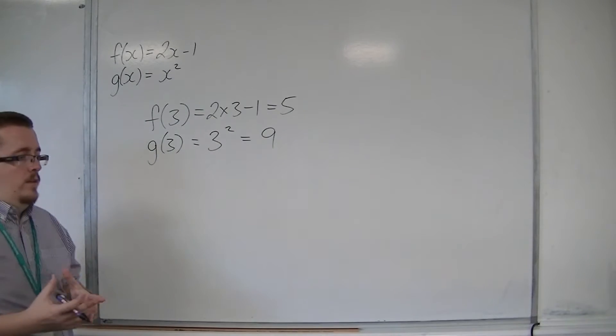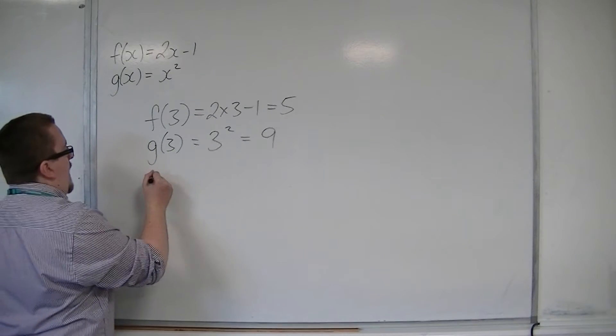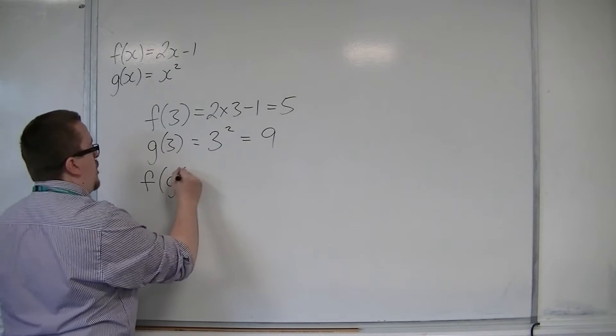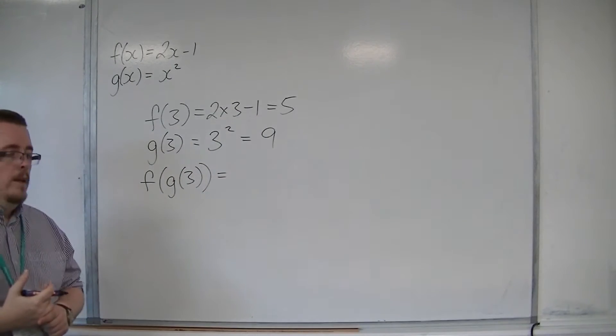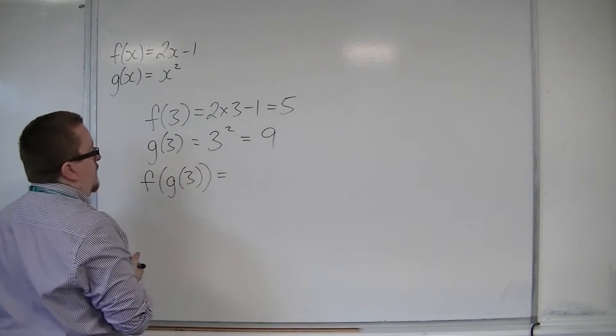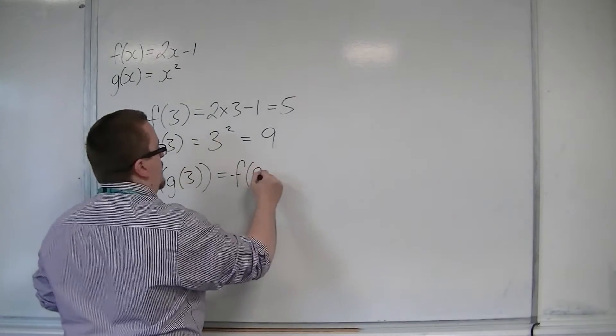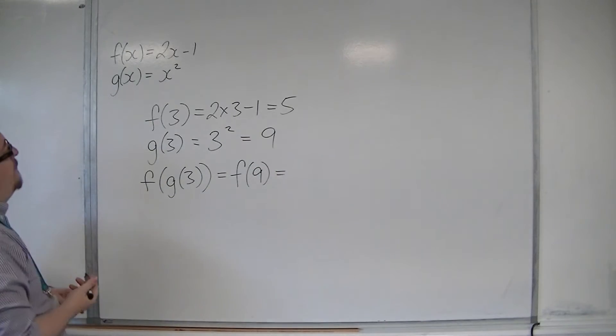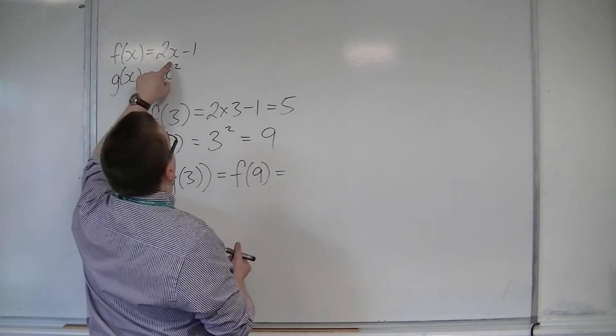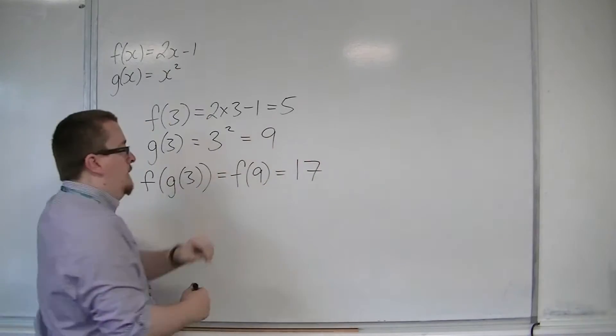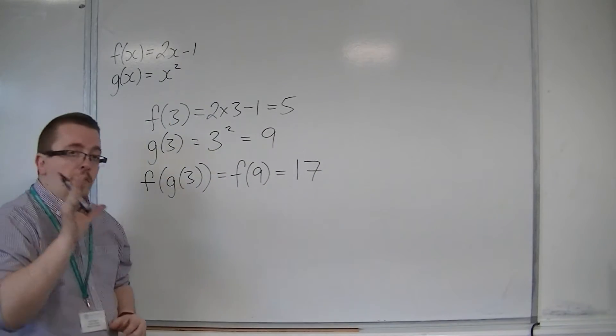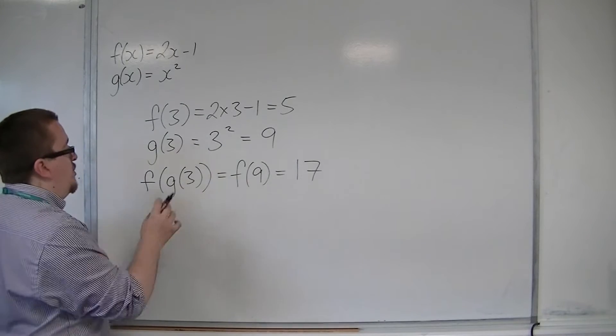So what then would be f of g of 3? So we know what g of 3 is, that's 9. So surely that's f of 9. So f of 9 is 2 times 9, take away 1, which is 17. So that means I can easily substitute in g of 3.